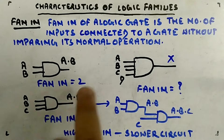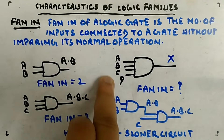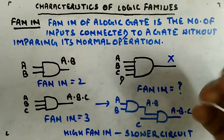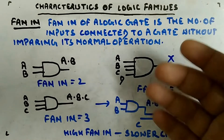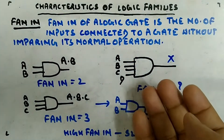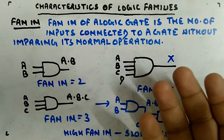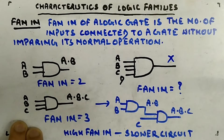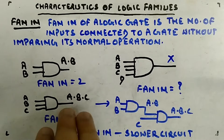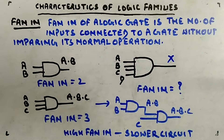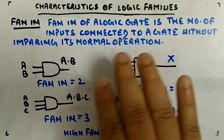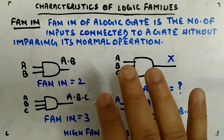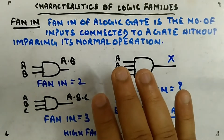But if you try four inputs A, B, C, D and it's not producing the correct output, then the fan-in is not four — it must be less. You go back and check: if three inputs produce a successful output, then the fan-in is three. That is the maximum number of inputs you can apply to a gate so that its operation is not impaired.